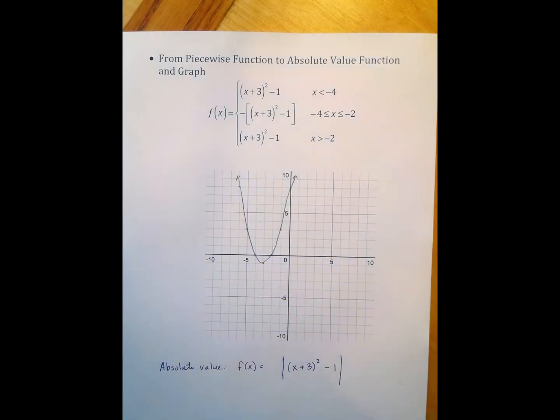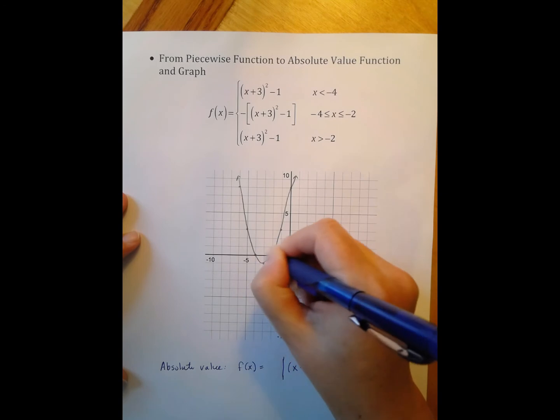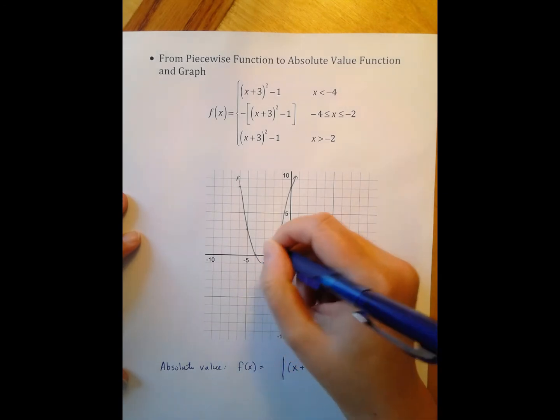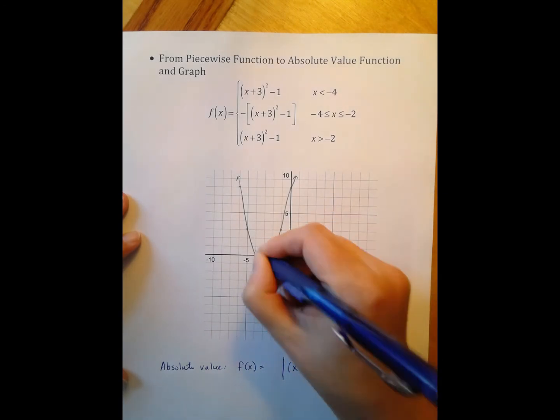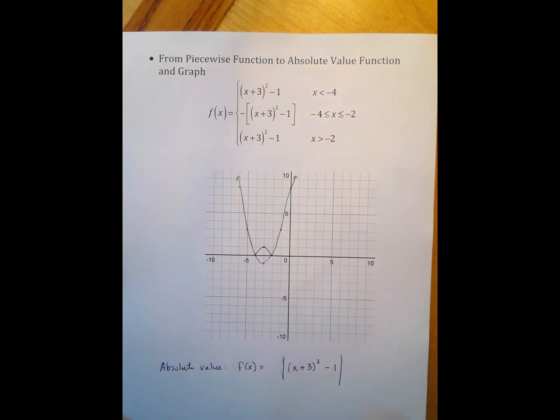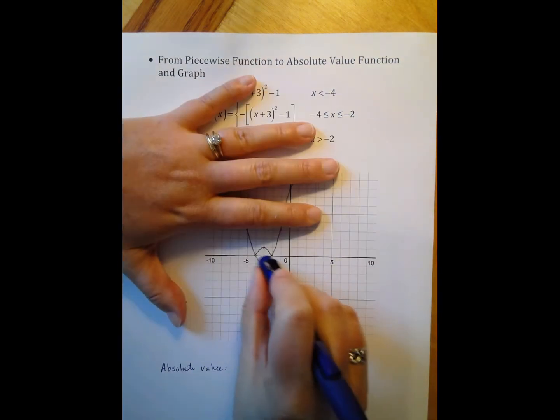And then lastly, take care of the absolute value piece, which means that I need to have anything that's a negative y becomes a positive y. So I flip it up. And I graph that. And in this case, instead of highlighting, I'm going to erase just so you can see the other way of doing this.